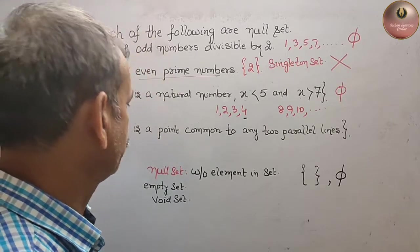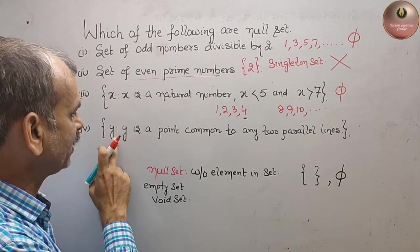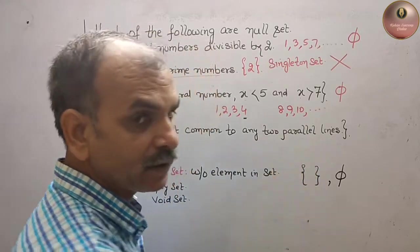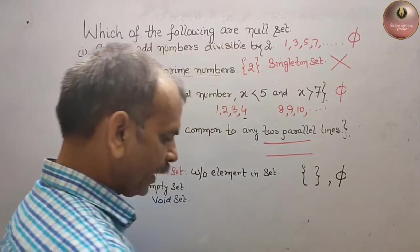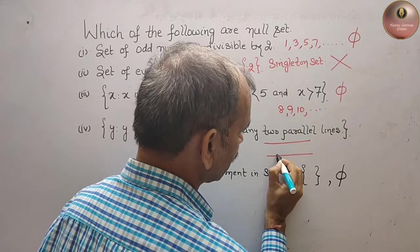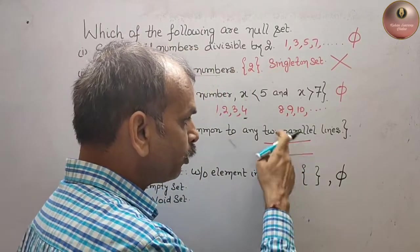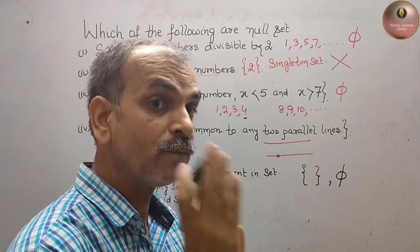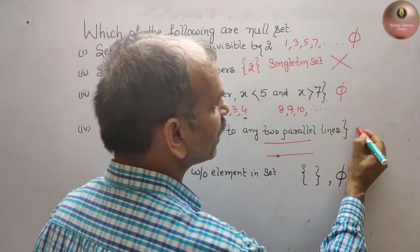Next question: the set of all y, all elements of y such that y is a point common to any two parallel lines. So suppose we have made two parallel lines like this. Take any point on this, suppose we have taken a point here. Is it common to both parallel lines? No, it is only on one line. Therefore, we can say it's a null set.